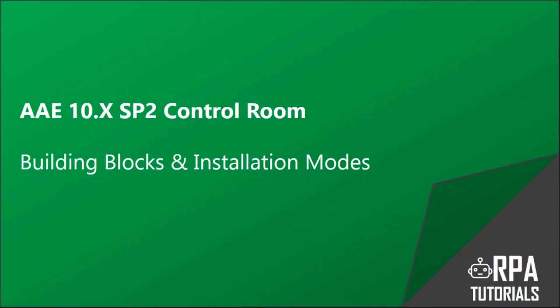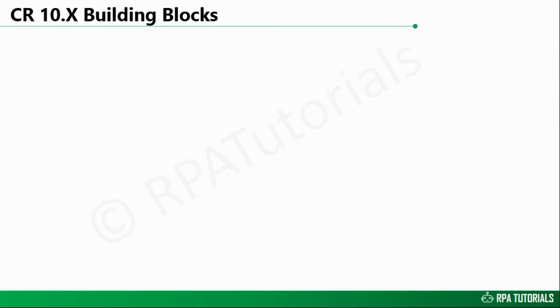Dear friends, welcome to RPA tutorials. In this video, we are going to cover the fundamental building blocks and the different installation modes and architecture of the new Automation Anywhere Enterprise Control Room. At the time this video was created, the latest version of Automation Anywhere is 10.5. Let us now look at the fundamental building blocks of Control Room 10.x. Understanding these building blocks is important when deciding the type of Control Room installation.